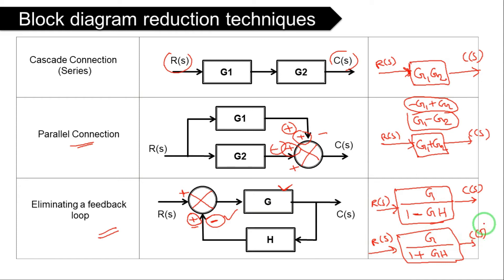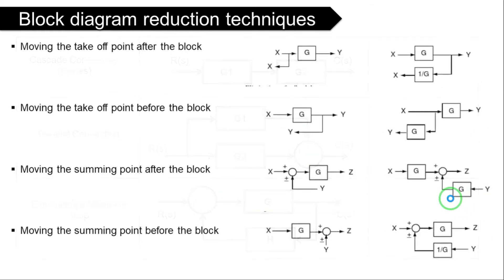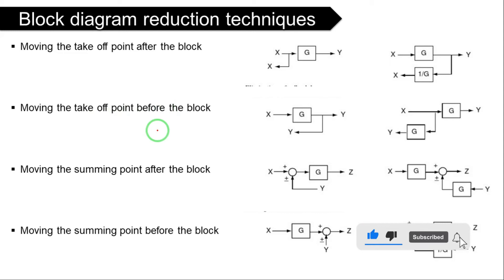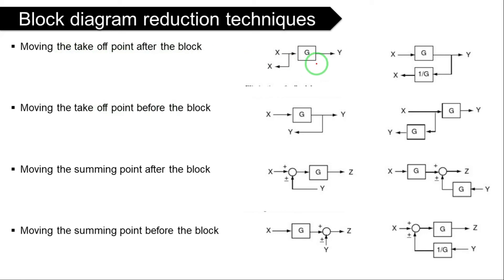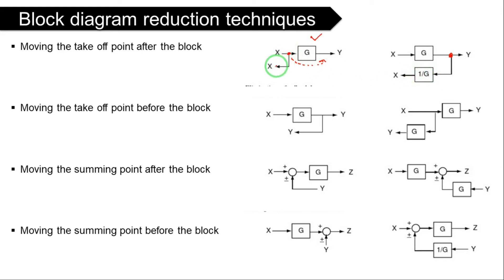These are the three important rules. Now we will move to more important rules — there are around seven rules total. Rule 4 is moving the takeoff point after the block. If a takeoff point is currently before a block G, and you want to move it to the right side — after the block — then to compensate, you divide by the block gain G. So the branch in the feedback path gets a factor of 1/G.